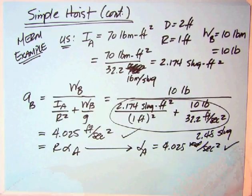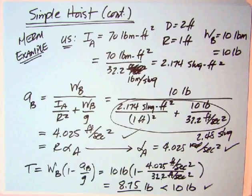That's equal to R alpha A, and so that simply gives us alpha A divided by 1 foot gives us 4.025 radians per second squared, which is exactly what was in the MERM. But what about tension? Using our equation WB, 1 minus AB over G, put that in, get 8.75 pounds, less than 10 pounds, which is great.